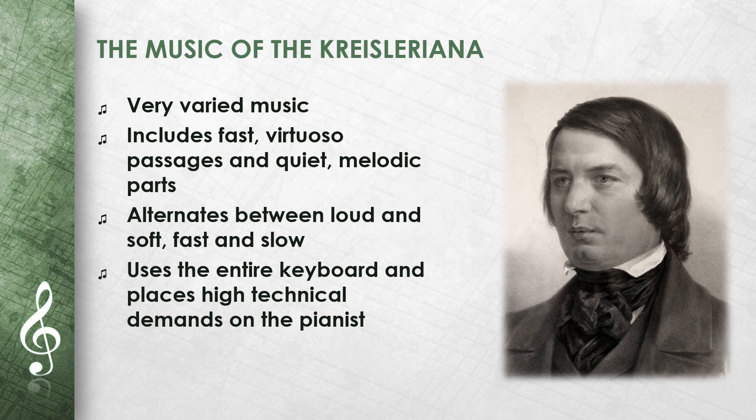The music of the Kreisleriana is very varied. Schumann uses many different moods and colors. There are fast, virtuoso passages and quiet, melodic parts. The music often alternates between loud and soft, fast and slow. Schumann uses the entire keyboard, from low to high notes. The pieces place high technical demands on the pianist.